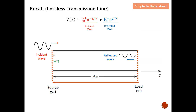Before we jump to the discussion on VSWR, let's do a very quick recall on the lossless transmission line. This is the equation I have derived earlier in the previous video. If you are not able to recall how I obtained this equation, please take a look at the playlist under the description. This Vz here basically indicates the voltage at any particular point on the transmission line.